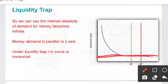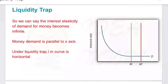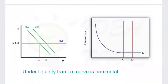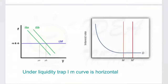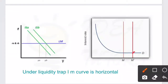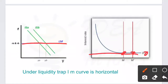Money demand is parallel to the x-axis in liquidity trap. The LM curve is also horizontal, just like money demand. The LM curve shows the locus of all the points where the money market is in equilibrium — where money supply and money demand are the same. Since in liquidity trap money demand is parallel to the x-axis, when we join all these equilibrium points we get a horizontal LM curve. So under liquidity trap, the LM curve is horizontal or parallel to the x-axis.